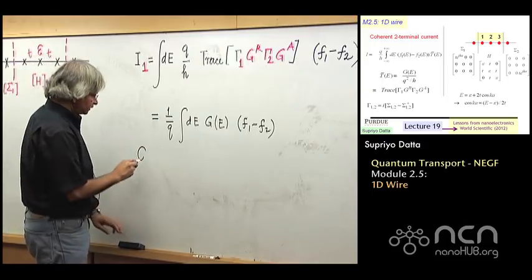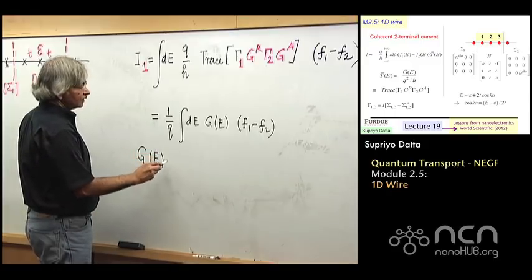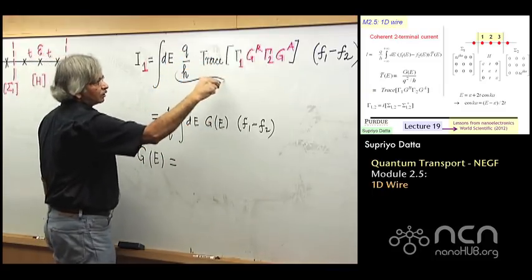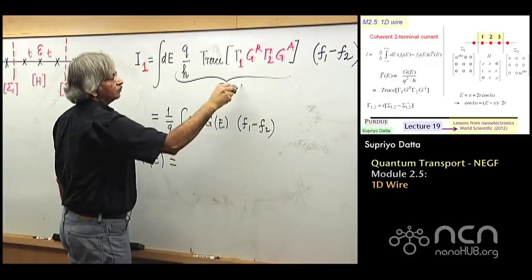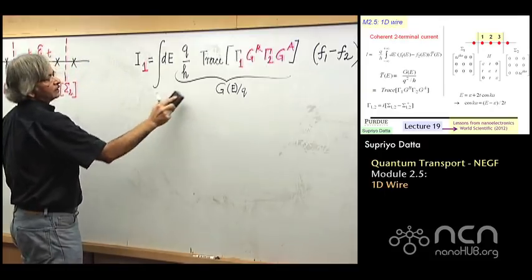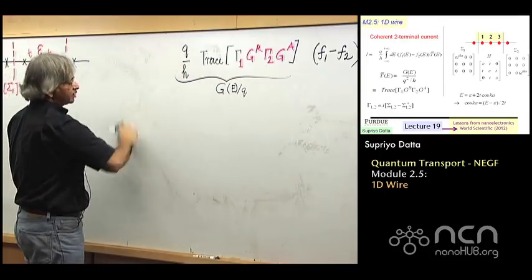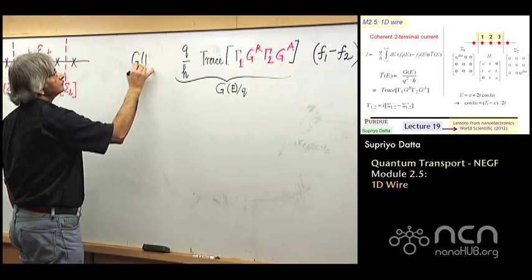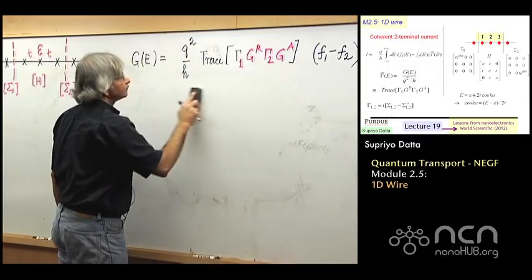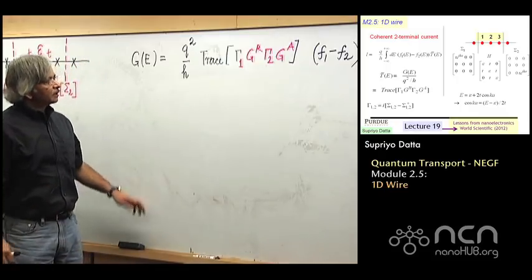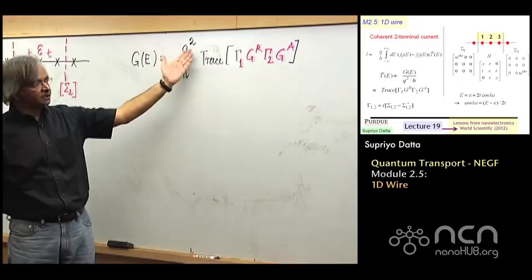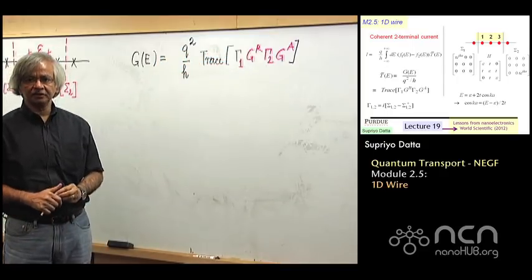So if you compare the two, you see what it is telling you is that we now have an expression for this conductance function. So in part one of this course, what we had done was we had used various semi-classical arguments to write down this conductance function. In fact, the expression we had was something like Q squared d over 2t, where d was the density of states and t was the transfer time. These were semi-classical arguments. What we have now obtained is a quantum expression for it. For quantum coherent transport, this is the conductance function.